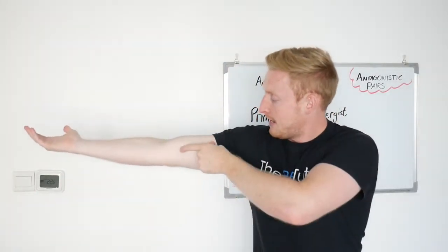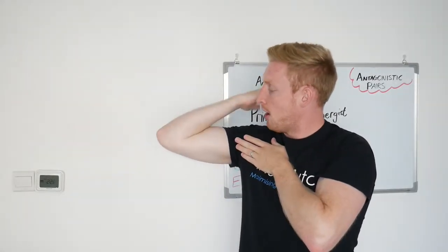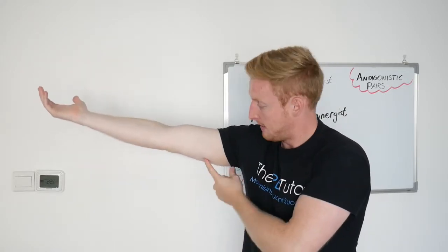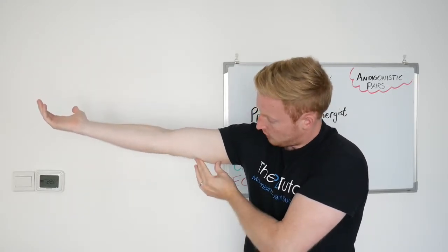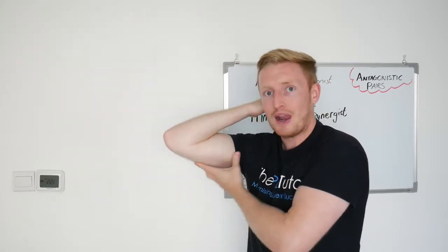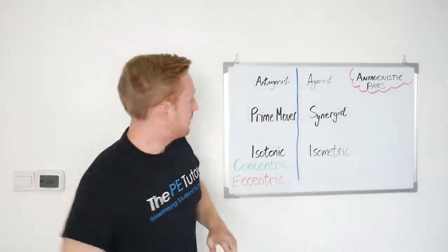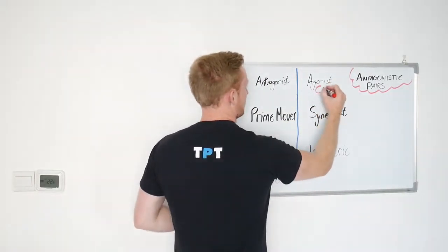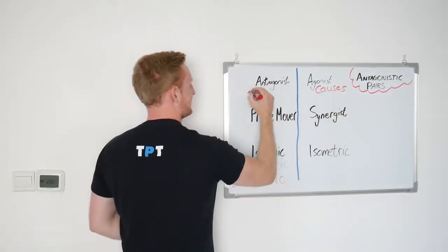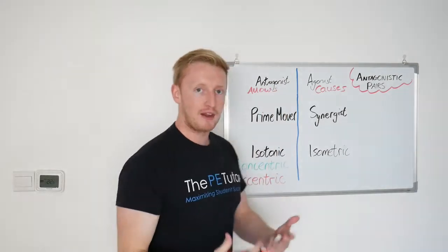Muscles come in pairs. One of them is the agonist, which is causing the movement, and the other is the antagonist, which is relaxing to allow the movement to happen. The agonist causes the movement and the antagonist allows it. It lets that movement action happen.